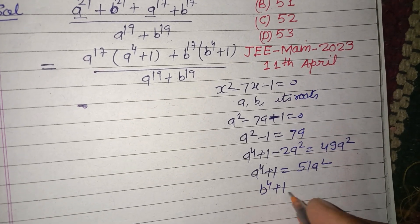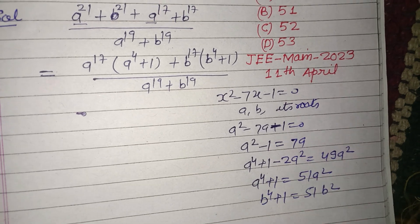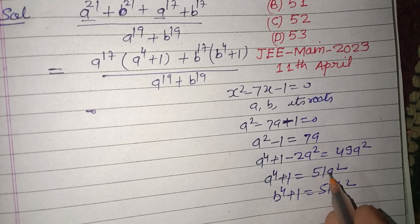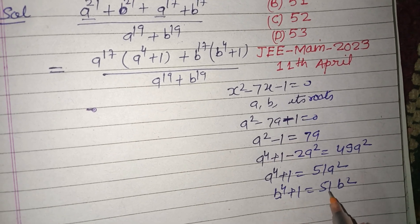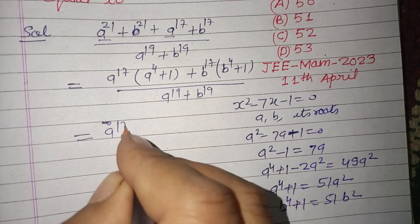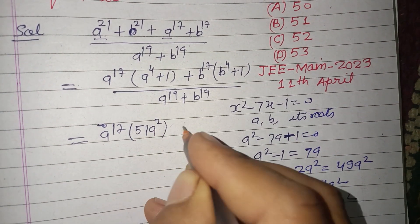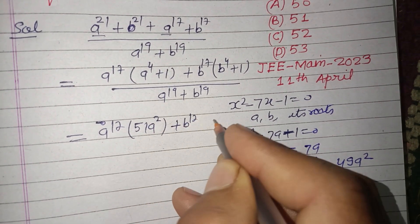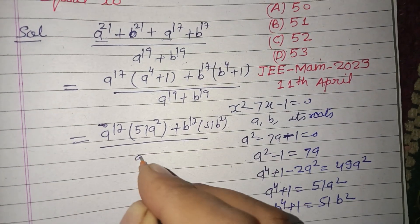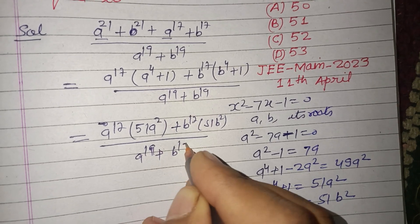Similarly, b⁴ + 1 = 51b². So we have a⁴ + 1 = 51a² and b⁴ + 1 = 51b². Substituting into the expression: [a¹⁷ · 51a² + b¹⁷ · 51b²] over (a¹⁹ + b¹⁹), which gives 51(a¹⁹ + b¹⁹) over (a¹⁹ + b¹⁹).